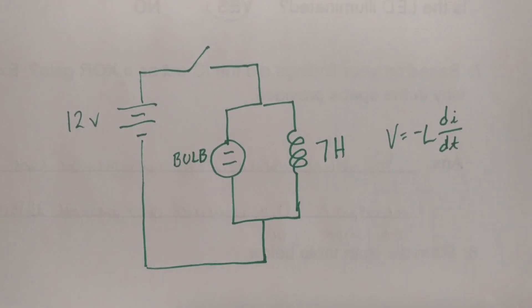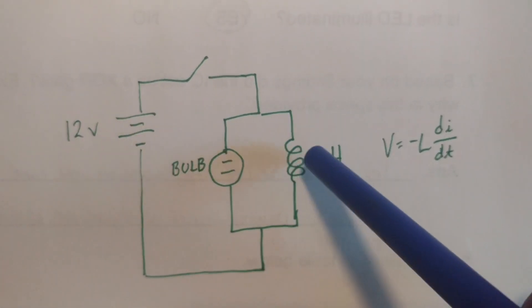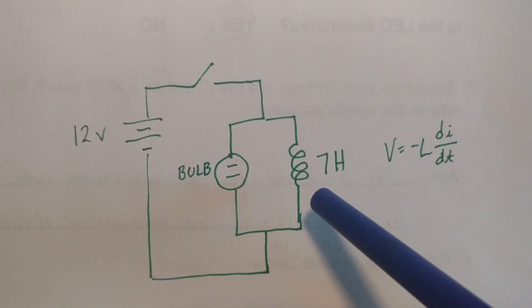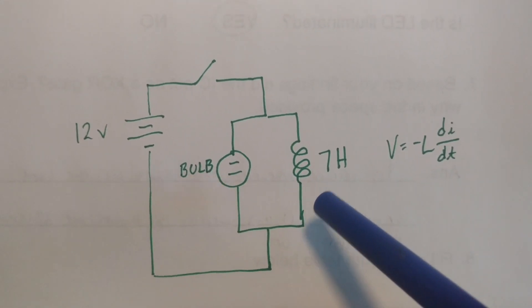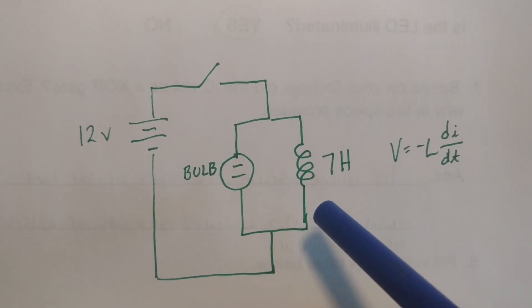So why does that happen? Let's take a look at the circuit diagram again. When the switch gets closed current flows through here and it goes into the inductor and you can think of the inductor as storing current, sort of like the way a capacitor would store voltage.